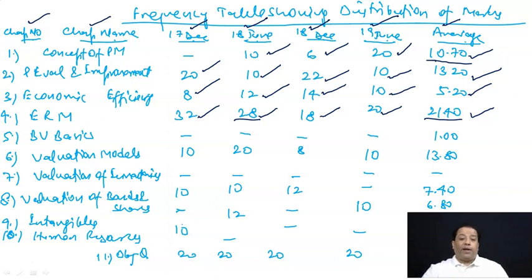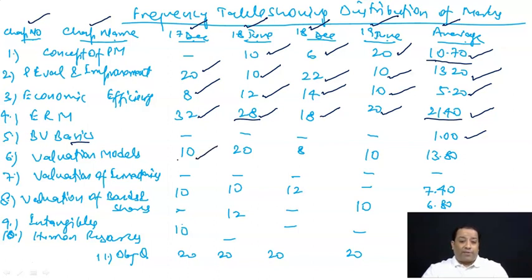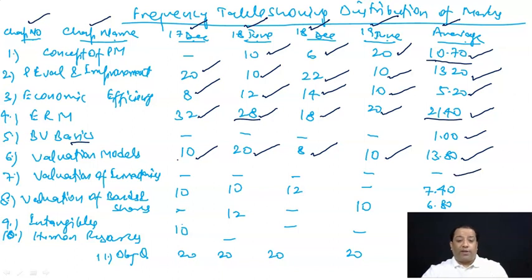Business valuation basics में से on an average बहुत कम पूछा गया है। Valuation models: 17 December में 10 marks, 18 June में 20 marks, 18 December में 8 marks, 19 June में 10 marks — average 13.80 marks। Valuation of inventory में से generally खास question नहीं है। Valuation of bonds and shares: 17 December में 10 marks, 18 June में 10 marks, 18 December में 12 marks, 19 June में कुछ नहीं — average 7.40 marks।